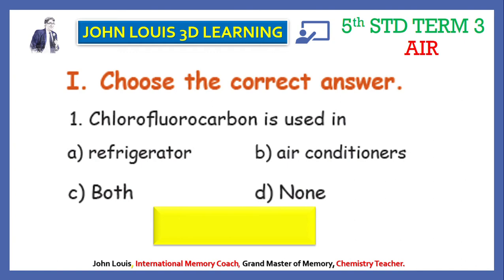First question: chlorofluorocarbon is used in — chlorofluorocarbon is a chemical substance used as a coolant. Option A is refrigerator, B is air conditioner, C is both refrigerator and air conditioner, and D is none of the above. In fact, chlorofluorocarbon is used as a coolant in both refrigerator and air conditioner, therefore answer C — both A and B — is the correct one.